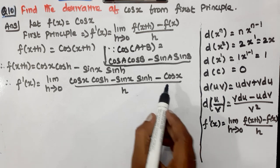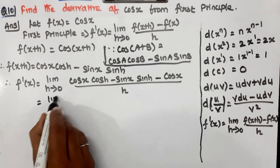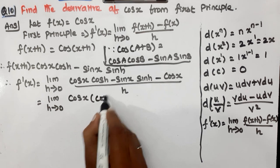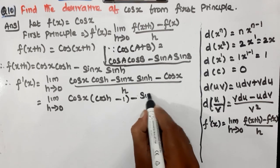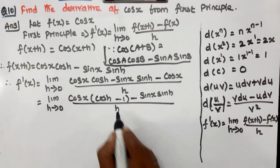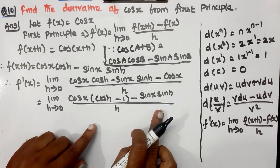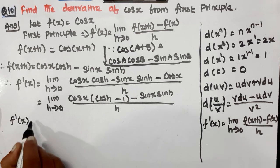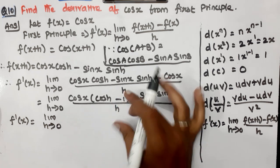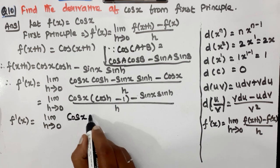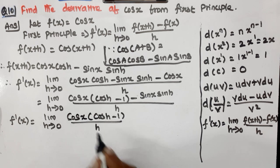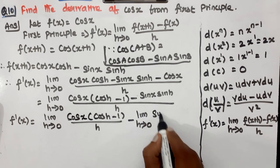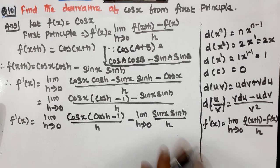After simplification, we split this into two terms: the first term is limit h tends to 0 of cos x · (cos h − 1) / h, minus the second term, limit h tends to 0 of sin x · sin h / h.